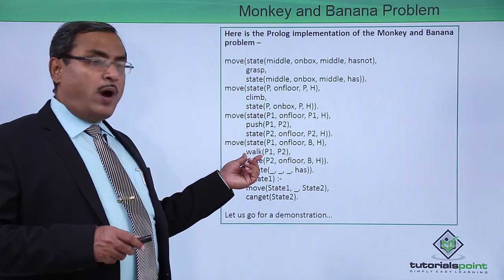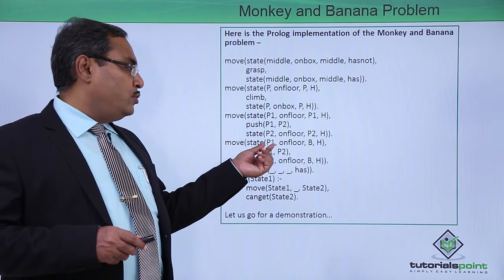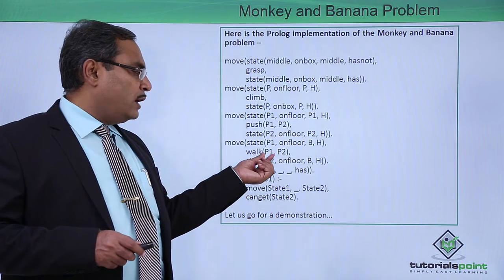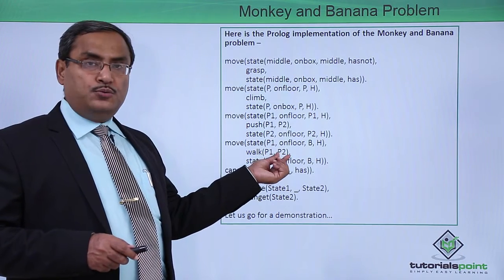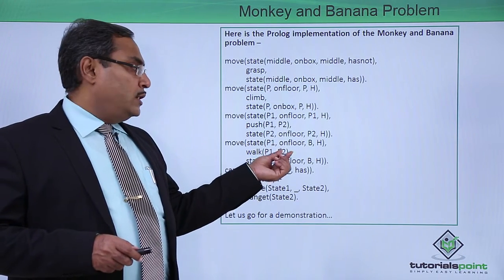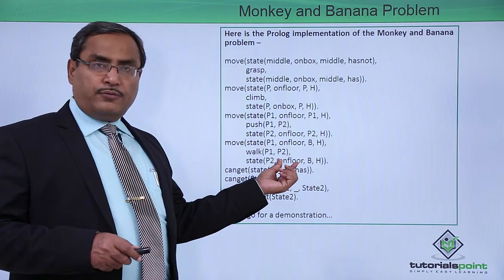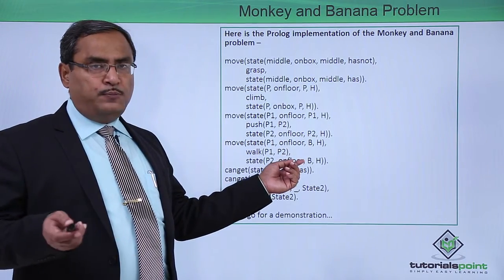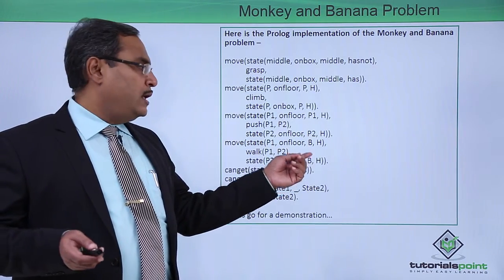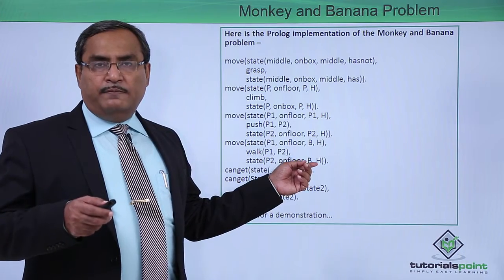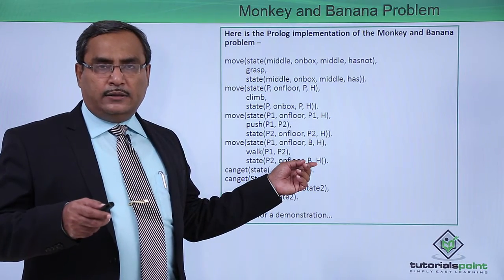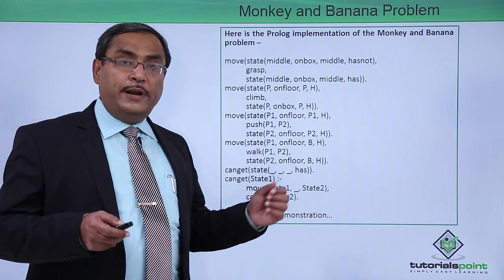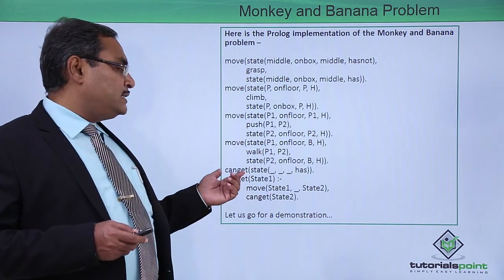For the move that is walk, the monkey will walk from P1 to P2. It must be on the floor; the block may be anywhere, so we put one variable for the block position. The banana-getting status — has or has not — remains unchanged.